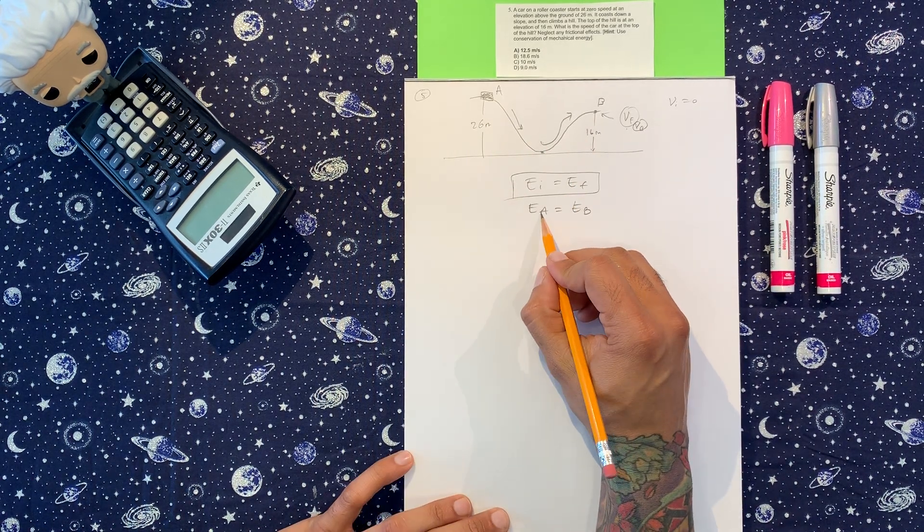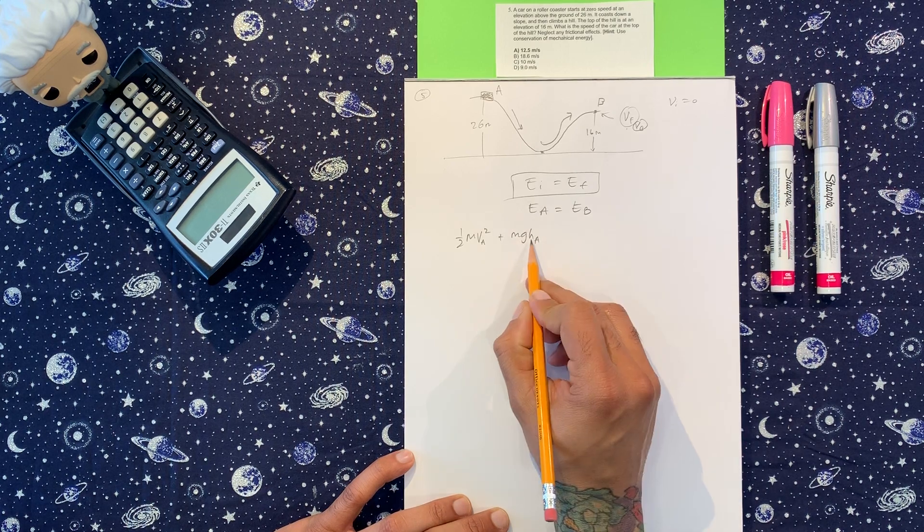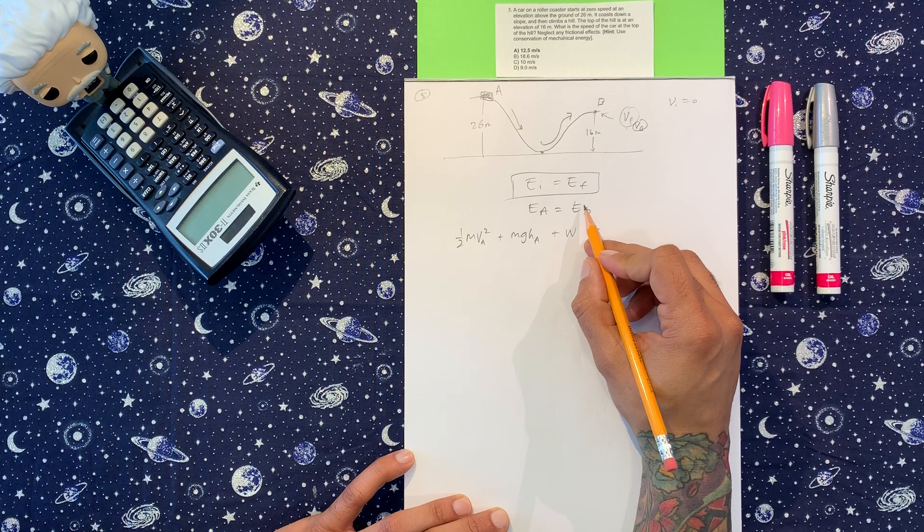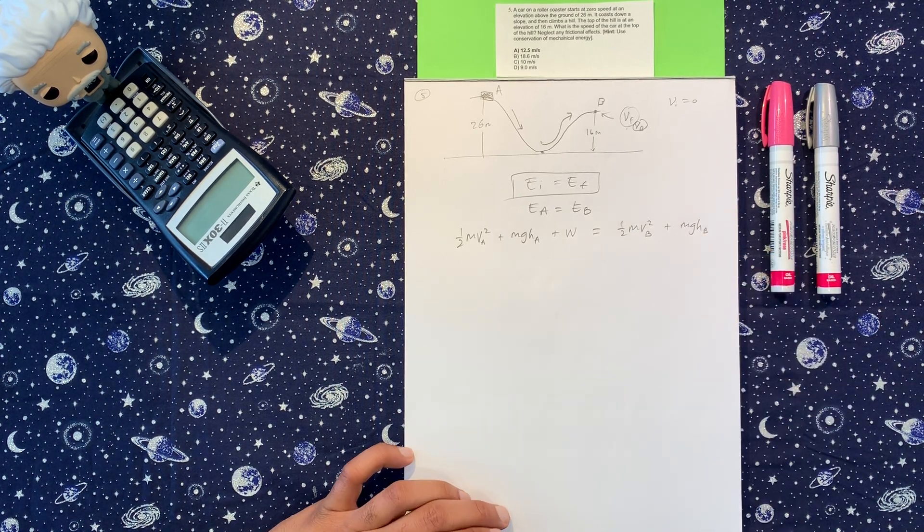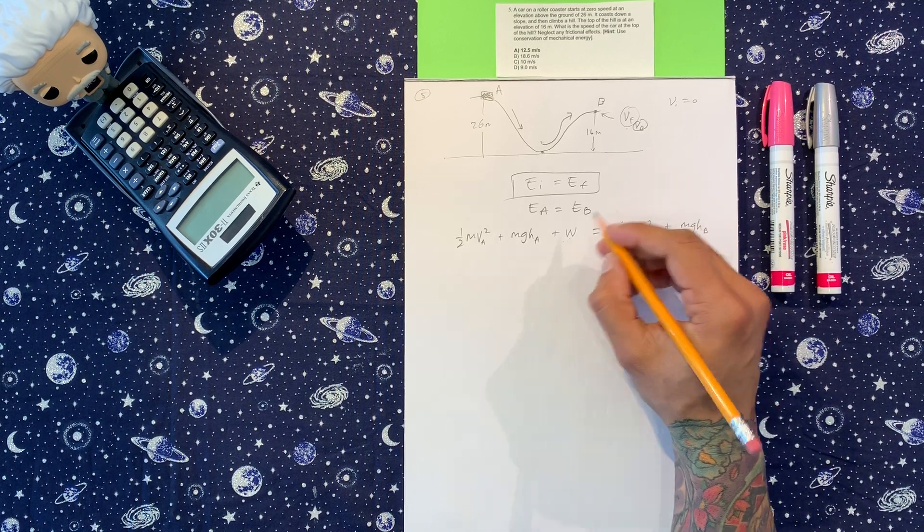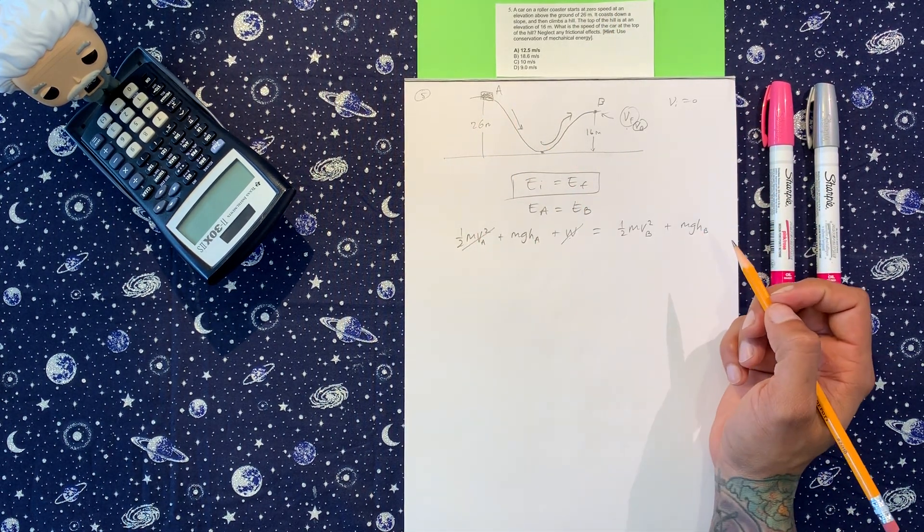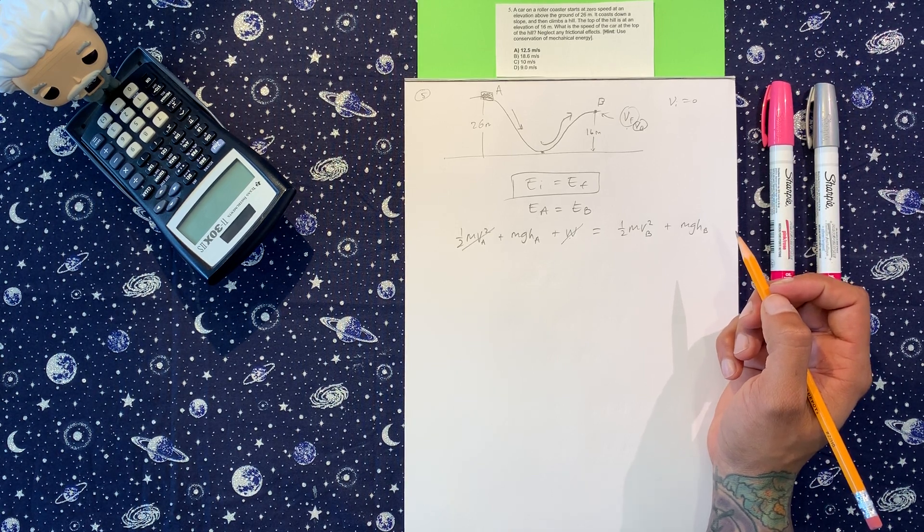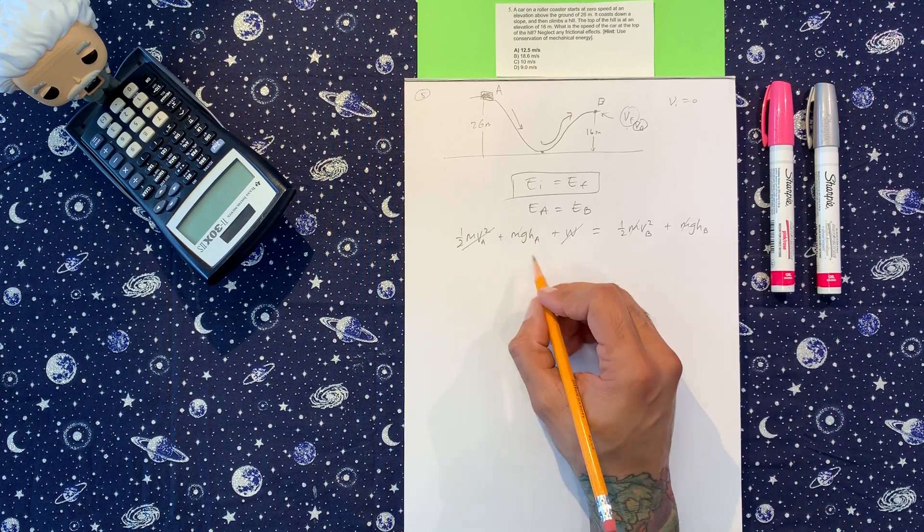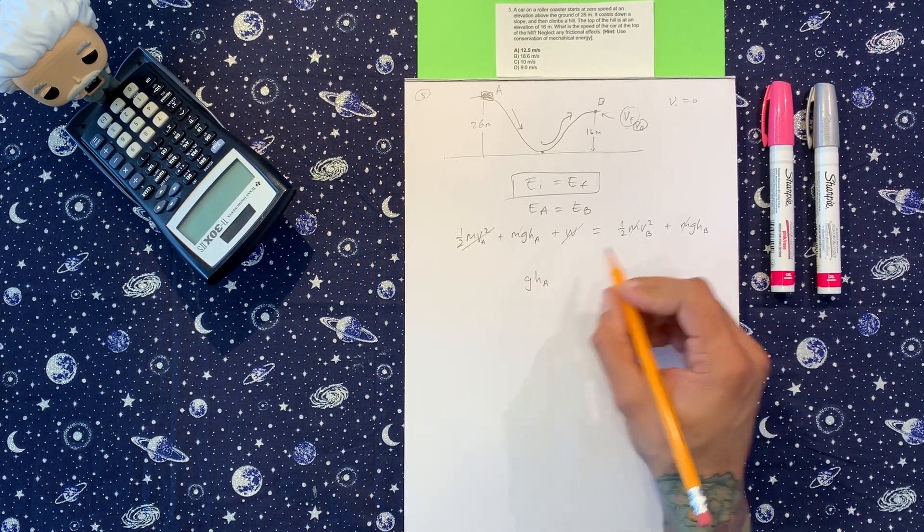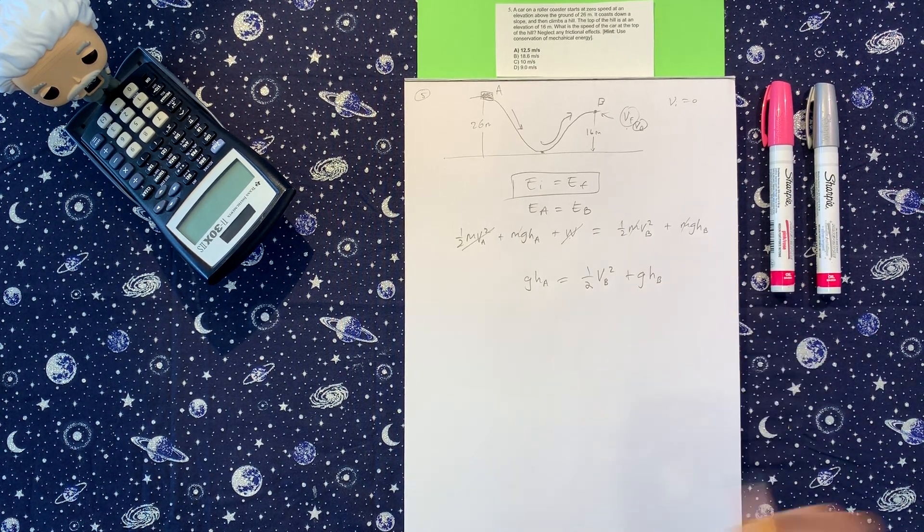Energy initial: we have one half mv squared velocity at A plus mgh at A plus work, equals energy at B, so one half mv squared at B plus mgh at B. We have no work because we have no force pushing the car, no friction opposing it. Initial velocity is zero so this one is zero. The masses can cancel. So we got g height at A and that's going to be equal to one half velocity at B squared plus g height at B.